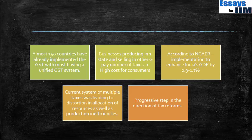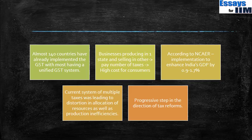Almost 140 countries in the world have already implemented GST with a unified system. Businesses producing in one state and selling in another pay a number of taxes, creating high costs for consumers. According to NCAER, if GST is implemented it is going to enhance India's GDP by up to around 1.7%. The current system of multiple taxes leads to distortions in allocation of resources and production inefficiencies. The more you complicate a system, the less efficient the economy will be, and it is a progressive step in the direction of tax reform — easier compliance leads to better collections and lesser costs for everybody.